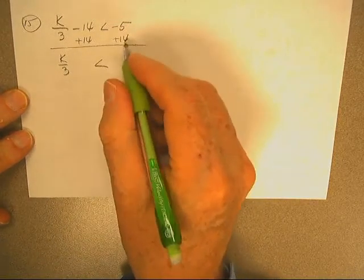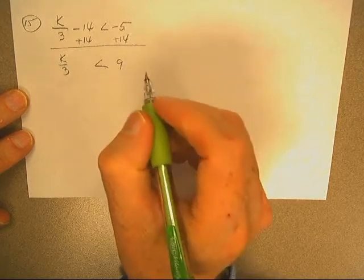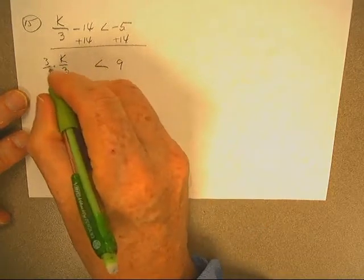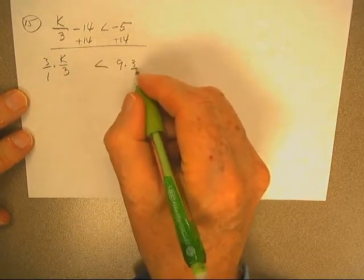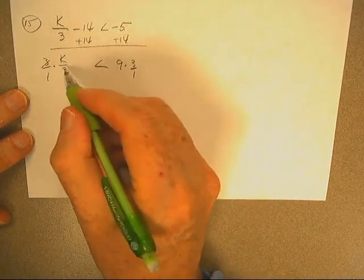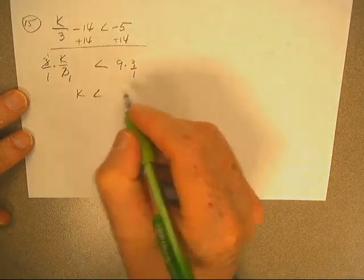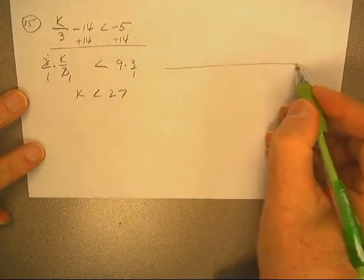k over 3 less than - this is going to be 9. And then I want to multiply both sides by 3 over 1, so these 3's will divide over here, and k is going to be less than 27.